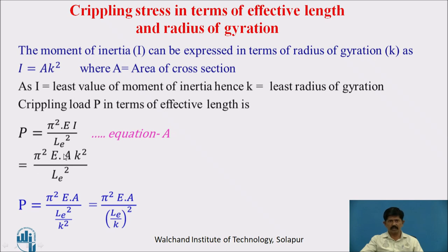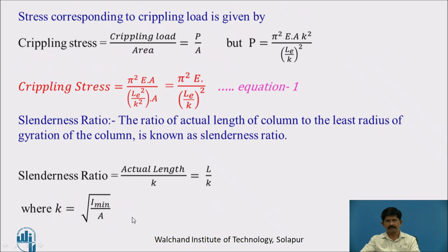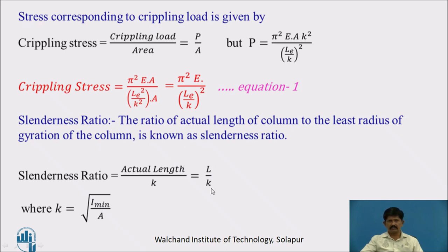Substituting, we get P = π²E · Ak² / L_eff². Taking k² into the denominator, we get P = π²EA / (L/k)². The crippling stress equals crippling load divided by area, giving π²E / (L/k)², where the area cancels out. Here, L/k is the slenderness ratio — the ratio of the length of the column to the least radius of gyration — and k = √(I_min / A).